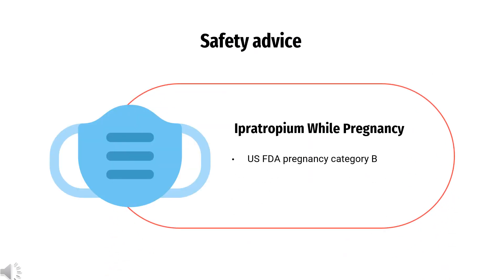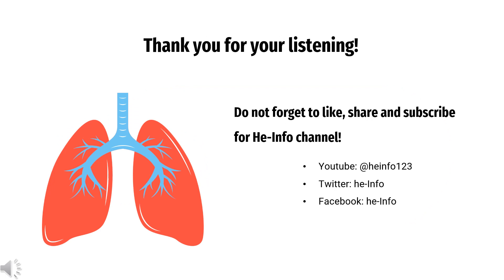Are there specific concerns about Ipertropium and pregnancy? U.S. FDA Pregnancy Category B: Animal reproduction studies have failed to demonstrate a risk to the fetus and there are no adequate and well-controlled studies in pregnant women. That's all the information about Ipertropium we collected.